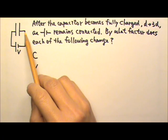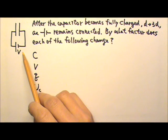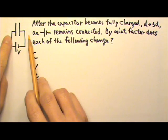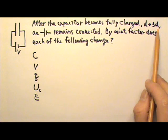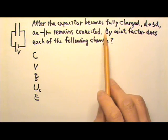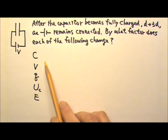A parallel plate capacitor connected to a battery becomes fully charged, after which the plates are pulled farther apart so that the plate separation triples, as the battery remains connected to the capacitor. By what factor does each of the following change?